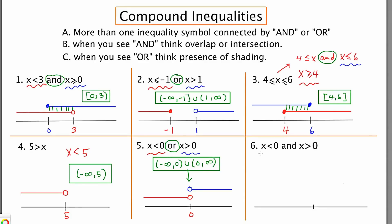And finally, number 6: X is less than 0 and X is greater than 0. Starting with X is less than 0: open circle, shade to the left. Now we'll look at the second part, X is greater than 0: open circle, shade to the right. Because the connector is AND, we're going to look for any sort of overlapping region. Is there a place where the blue and the red overlap? Well, in this case the answer is no. There's no place where the red and blue overlap. There's not one value of X that is less than 0 and at the same time greater than 0. So we say no solution. You could write out the two words, no solution, or you could use this symbol.